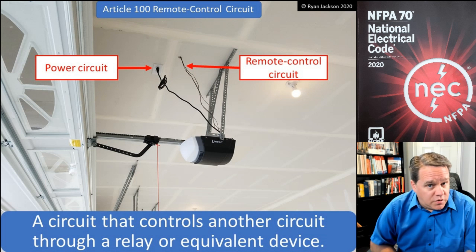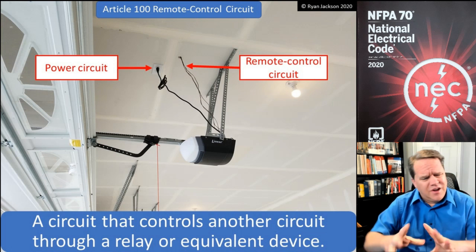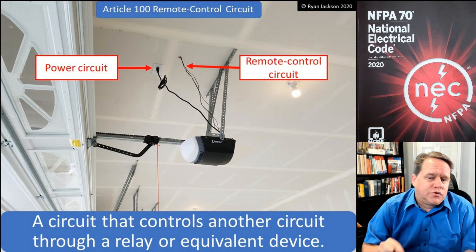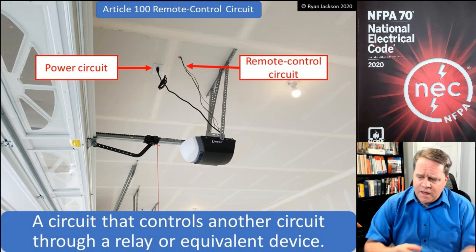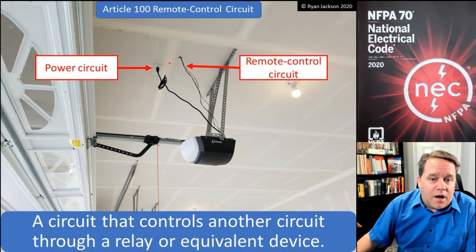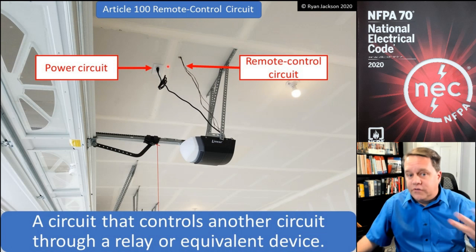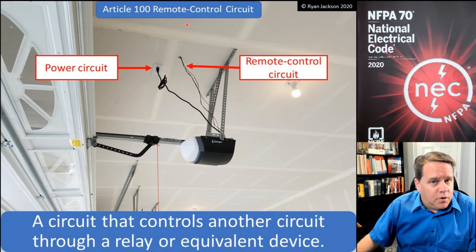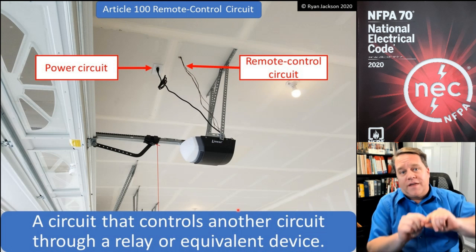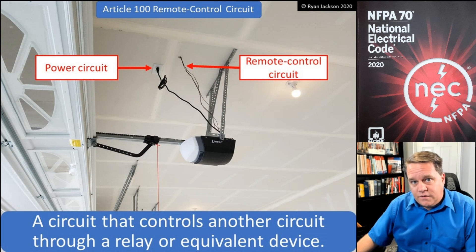The next definition is a remote control circuit. A remote control circuit is a circuit that controls another circuit through a relay or equivalent device. The best, most relatable example is the garage door opener. You have the power circuit — that's chapters 1 through 4 of the NEC, using MC cable, boxes, wire connectors — and then the remote control circuit goes from the opener itself over to the push button on the wall. Those low-voltage wires control the power circuit through a relay.